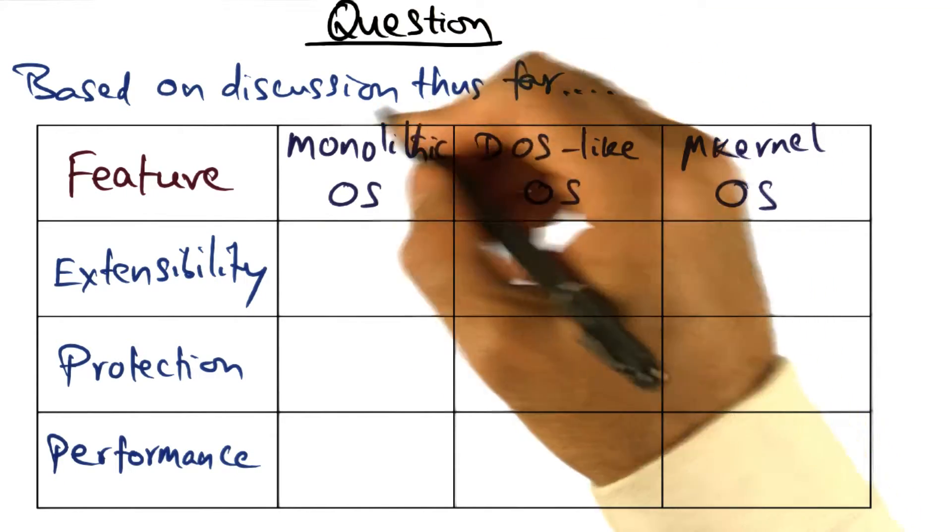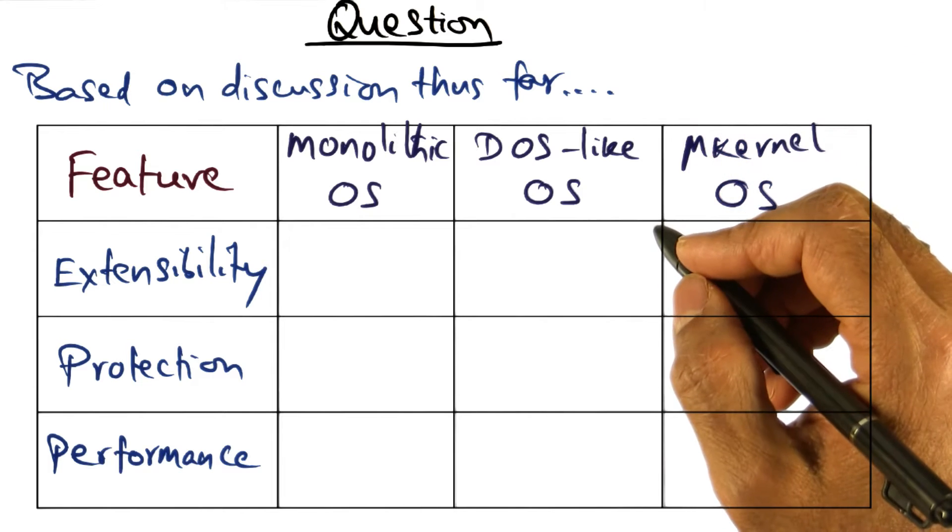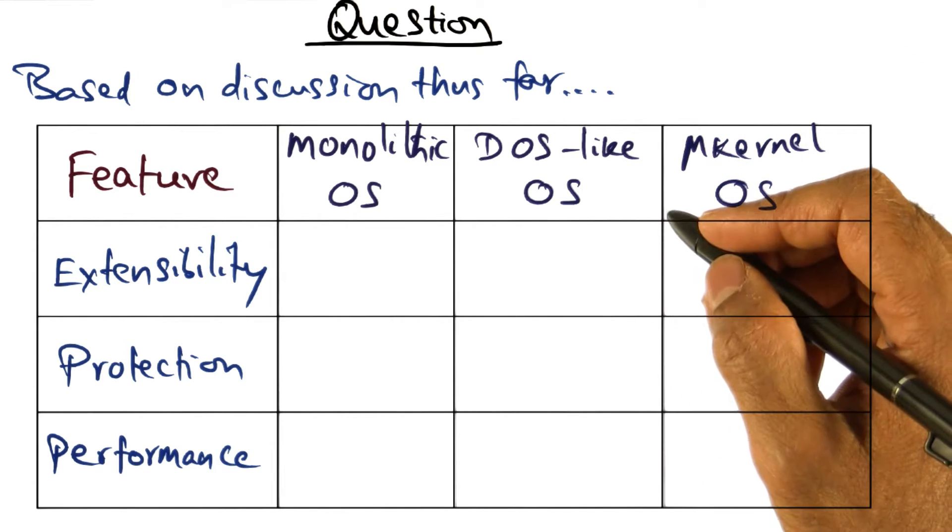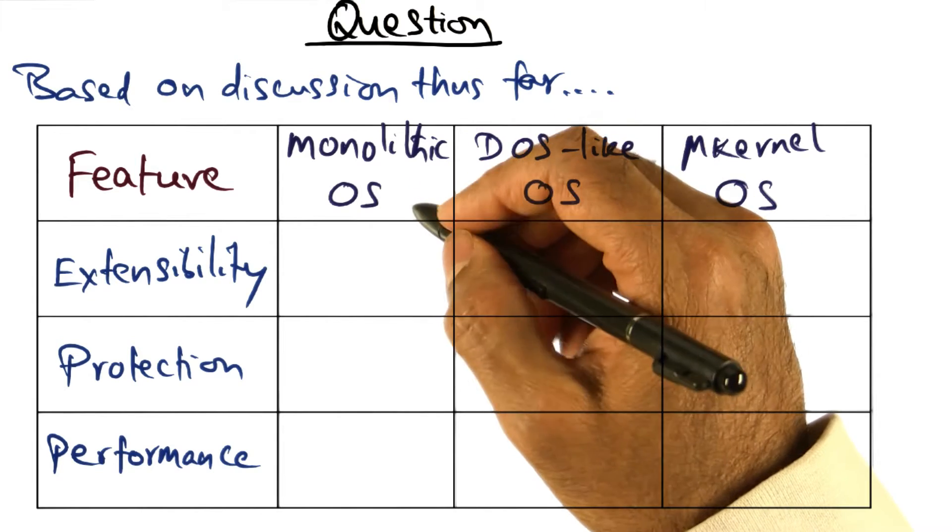Now it's time for a question. Based on the discussion we've had thus far, what I would like you to think about is coming up with a scorecard for the three different structures that I have identified.